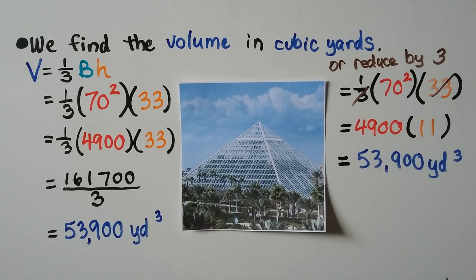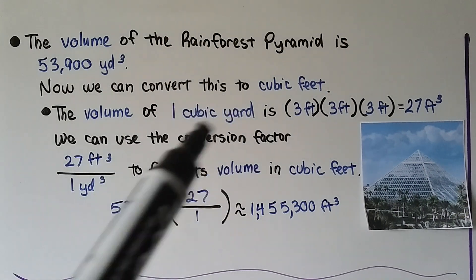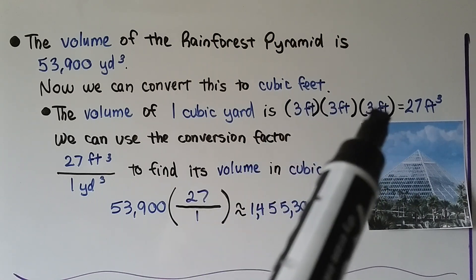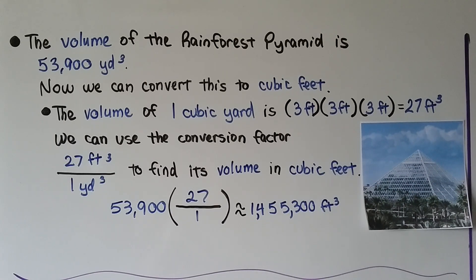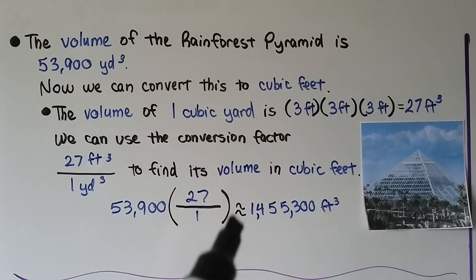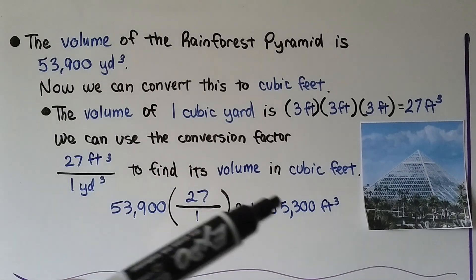We also need the volume in cubic feet. The volume of the Rainforest Pyramid is 53,900 cubic yards. Since one cubic yard equals three feet by three feet by three feet, or 27 cubic feet, we use the conversion factor of 27 cubic feet per cubic yard. Multiplying 53,900 times 27 gives approximately 1,455,300 cubic feet. Now we know the volume in both cubic yards and cubic feet.